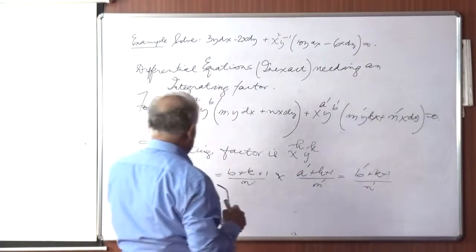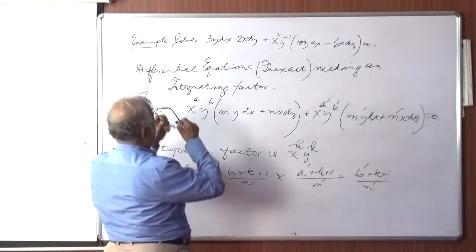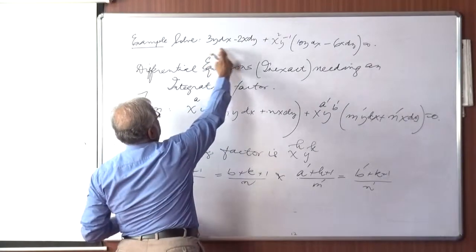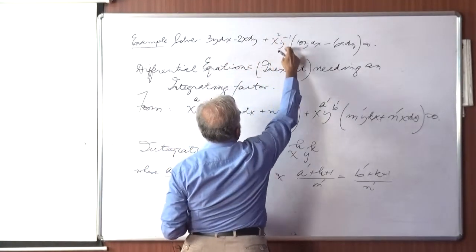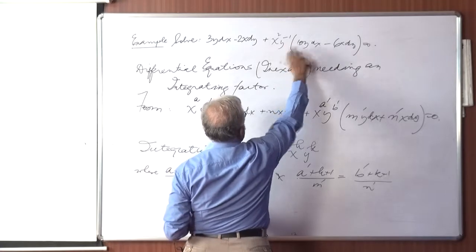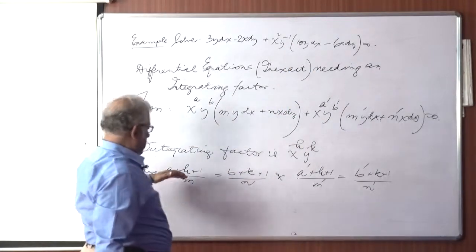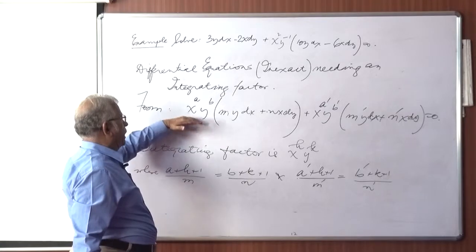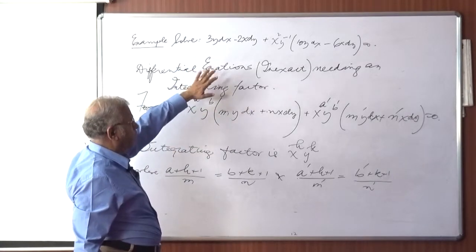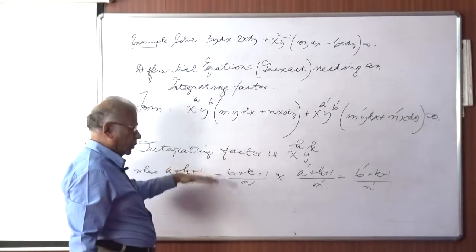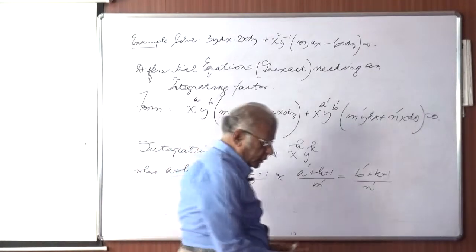We'll take an example. Solve: 3y dx − 2x dy + x² y⁻¹ (10y dx − 6x dy) = 0. If we compare this with the standard equation, we will rewrite it so that the values of a, b, m, n and all the rest are straightforwardly found.